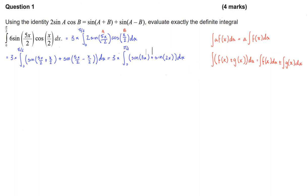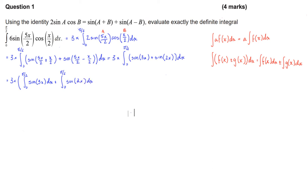We can now expand and take the integral of both sine ratios individually. So this equals three times the integral from zero to pi over two of sine of three x dx, plus the integral from zero to pi over two of sine of two x dx. Now we can start actually evaluating the integrals. The integral of sine of x dx equals negative cosine of x plus a constant.